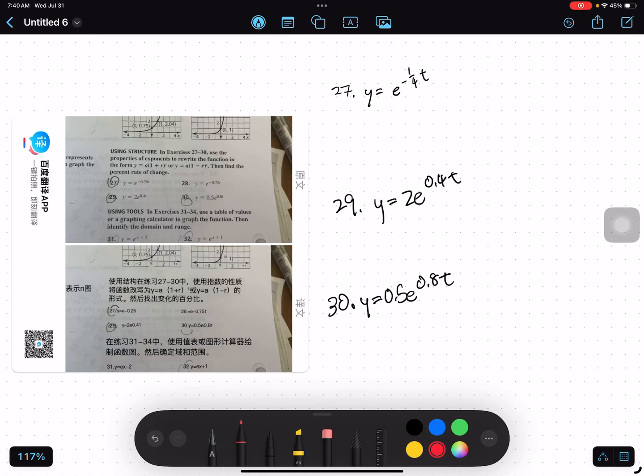So today we have three problems, 27, 29, and 30, and it asks us to write these exponential functions in the form given here.